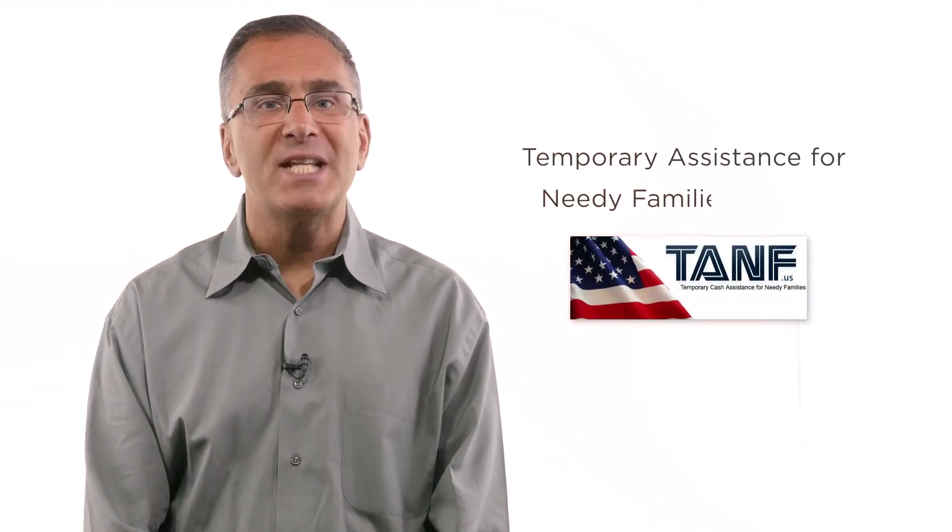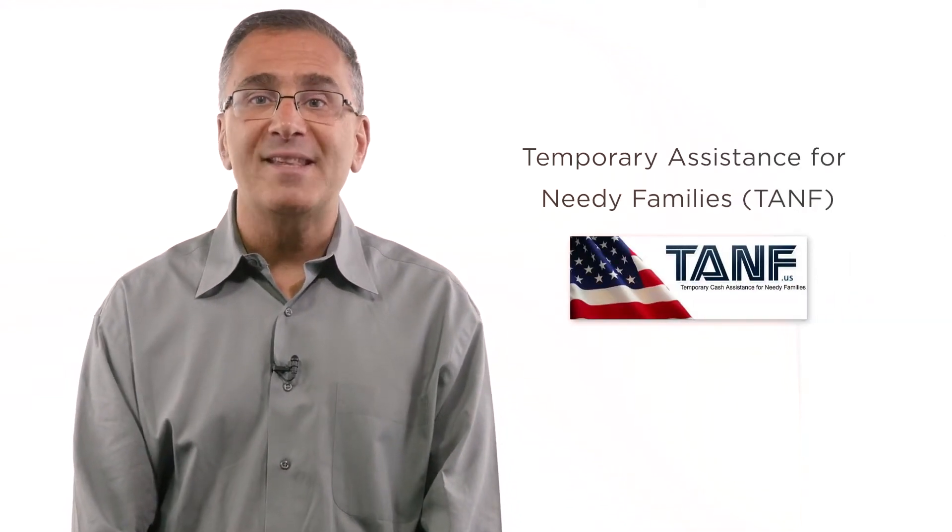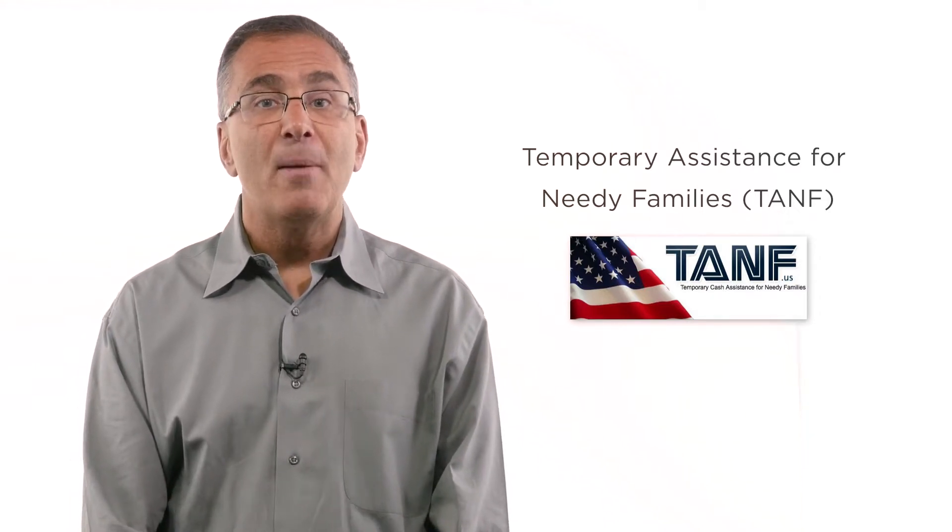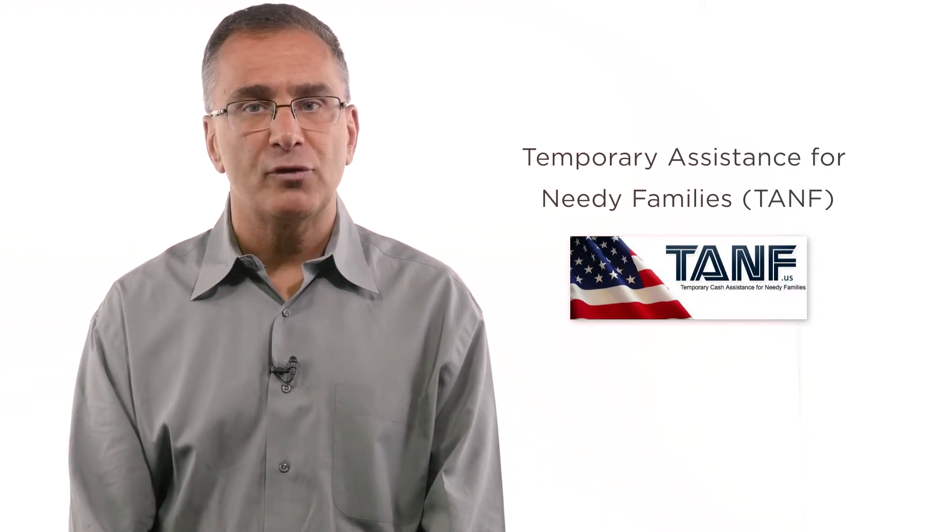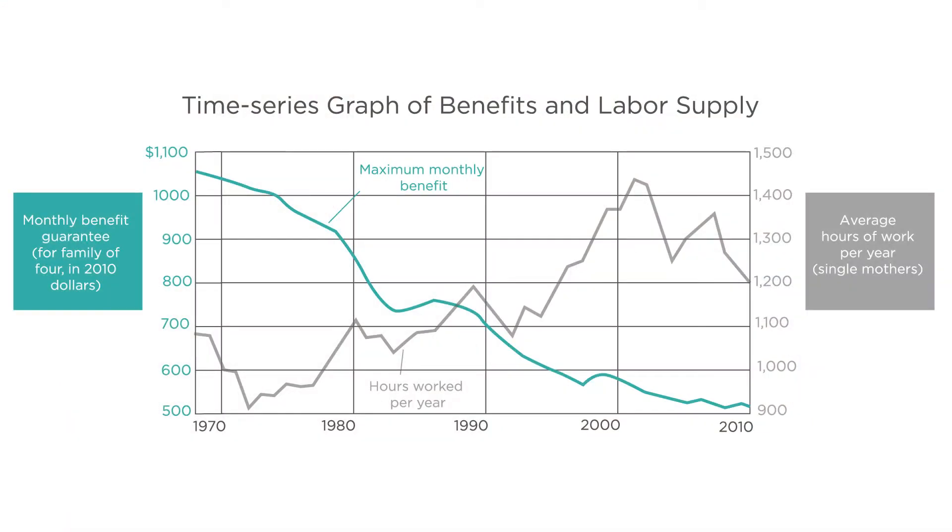Let's take as an example the Temporary Aid for Needy Families or TANF program. This is a program that provides cash assistance to low-income families, many of which are households headed by single mothers. As you can see from this graph, the maximum monthly benefit available through TANF adjusted for inflation decreased from over $1,000 a month in 1968 to around $500 in 2010. Over this same period, the average number of hours per year worked by single mothers rose from below $1,100 in 1968 to almost $1,200 in 2010.